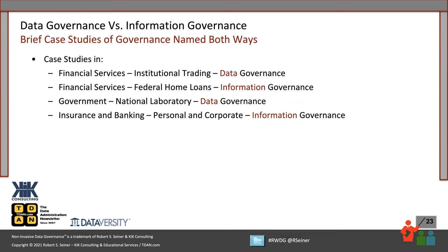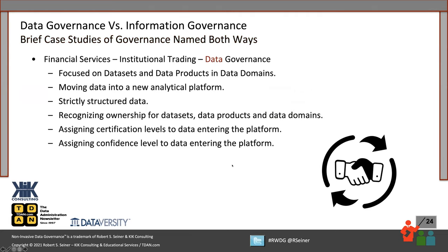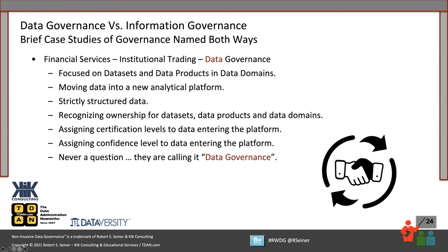Let's look at a few organizations and see how they went about selecting their names. Starting with financial services — one organization called it data governance, another called it information governance. In this financial institutional trading organization, which is not located in the United States, they are focused on data sets and data products, focusing on specific domains of data. They're moving their data into a new analytical platform — an opportune time to apply governance. They are focusing strictly on structured data within this platform, recognizing ownership and assigning certification and confidence levels. There was never a question — they were going to call it data governance.